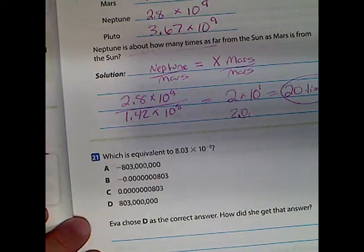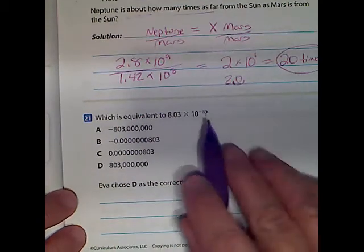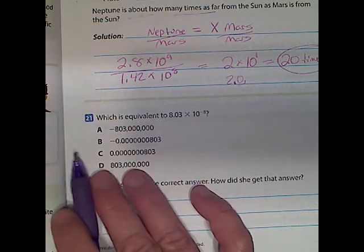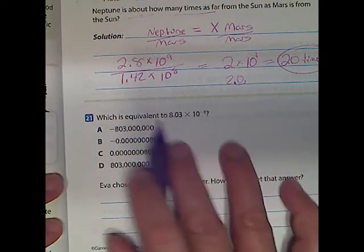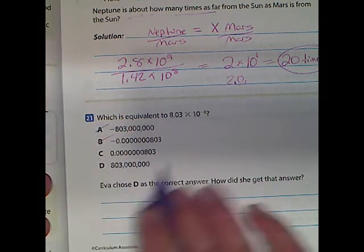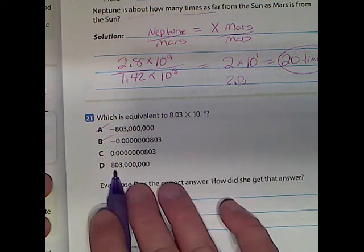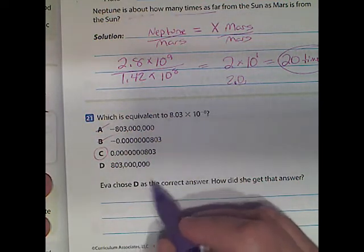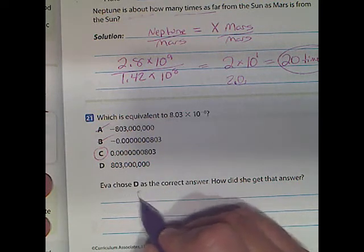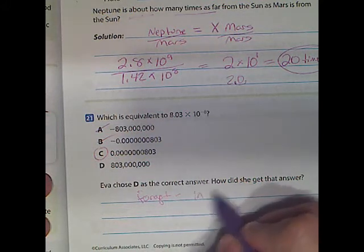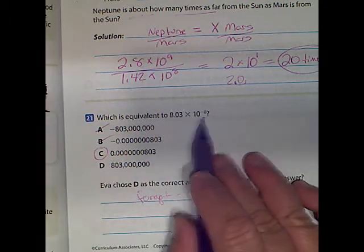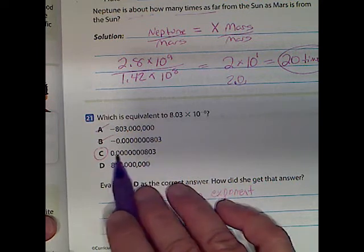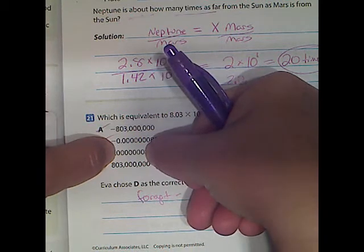Number 21: which is equivalent to this expression? A negative exponent makes it a decimal — it does not make the number negative. Negative numbers have a negative sign out front. So it can't be A or B. A positive exponent gives a large number; the negative exponent gives a decimal, so it must be C. D would be if you forgot about the negative in the exponent. We can verify: there should be 7 zeros between the decimal and the 8, and counting confirms there are 7.